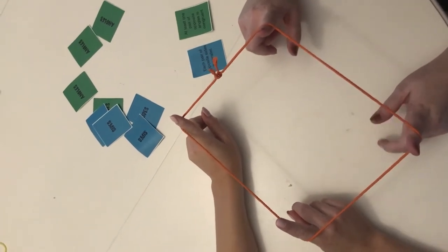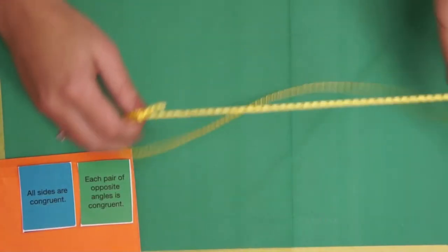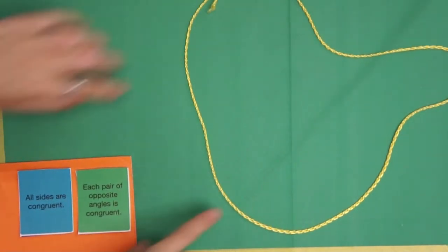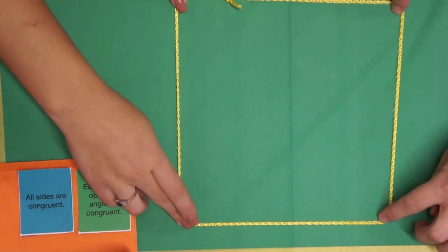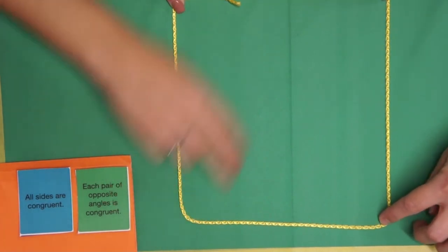In turn, each pair shows one type of quadrilateral that satisfies both properties to the rest of the players. Pairs must explain how each of the property cards are satisfied by the type of quadrilateral created.